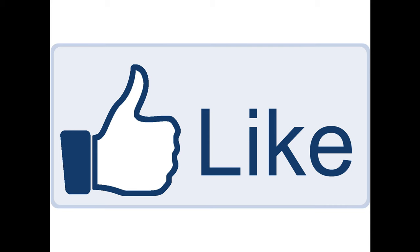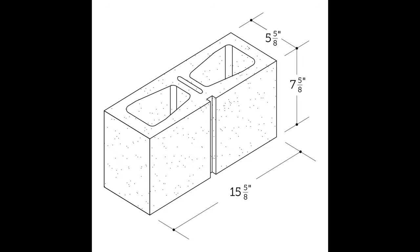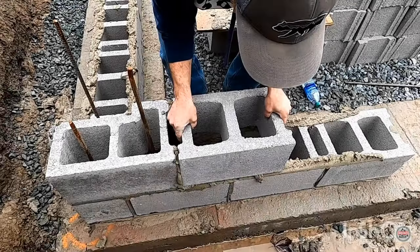Thank you very much. The basic building block that we use in Jamaica is going to be 16 by 8 by 8. The block is not actually 16 inches long — it's 15 and 5/8 inches — but you will put mortar in between, so the block is generally just called a 16-inch block. It is 8 inches wide by 8 inches tall, and that is your basic construction block.